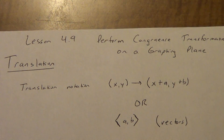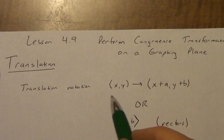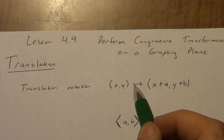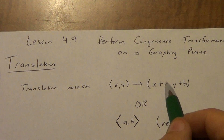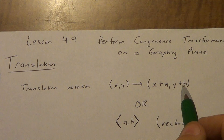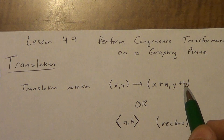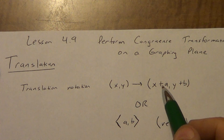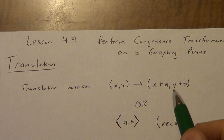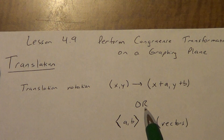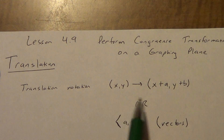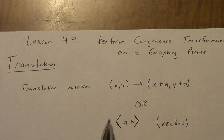There are two ways to write translation notation. The first is to use parentheses and start with x, y, then draw an arrow showing it changes to x plus a, comma y plus b. a and b are going to be actual numbers, and they could be negative numbers. So, we could have x minus 4 or x plus 2, y plus 1 or y minus 3. The other way — and this is the way our book does it most of the time —